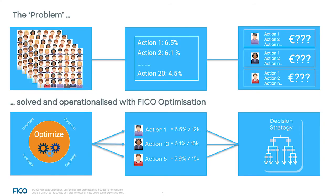The challenge is that you have large numbers of customers and not just one possible action. In this pricing example, for each customer, you can offer different prices. The question is: what is the best decision for each individual customer? That's the complexity that is typically solved and operationalized with FICO decision optimization — determining on the account level the best decision, in this instance the pricing decision, and then building a decision strategy to implement into operations and assign to newly defined micro segments.